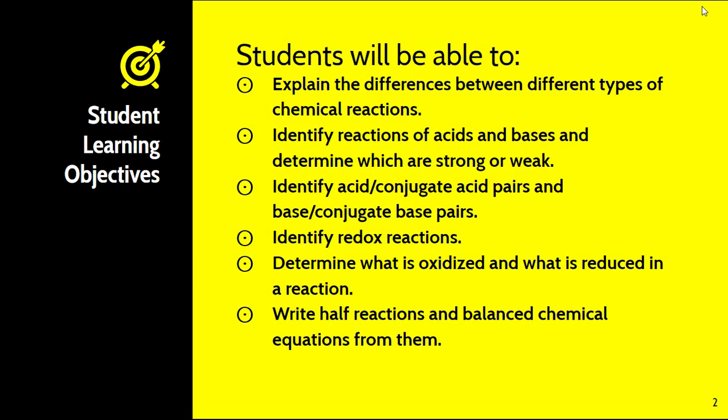By the end of this video you will be able to explain the differences between different types of chemical reactions. You should be able to identify reactions of acids and bases and determine which are strong and weak. You should be able to identify acid conjugate acid pairs and base conjugate base pairs. You should be able to identify redox reactions, determine what is oxidized and what is reduced, as well as write half reactions and balance chemical equations from them.